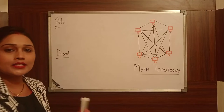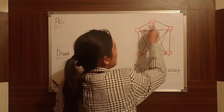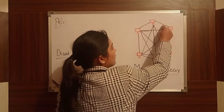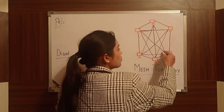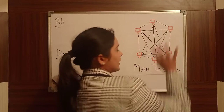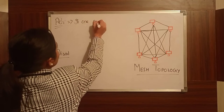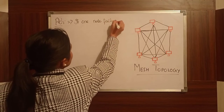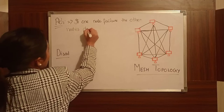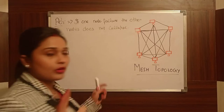So for mesh topology, what are the advantages and disadvantages? Devices can be connected using multiple paths, so data can be sent to any other node. The advantage is that if one node fails, the other nodes do not collapse — the network continues to function.